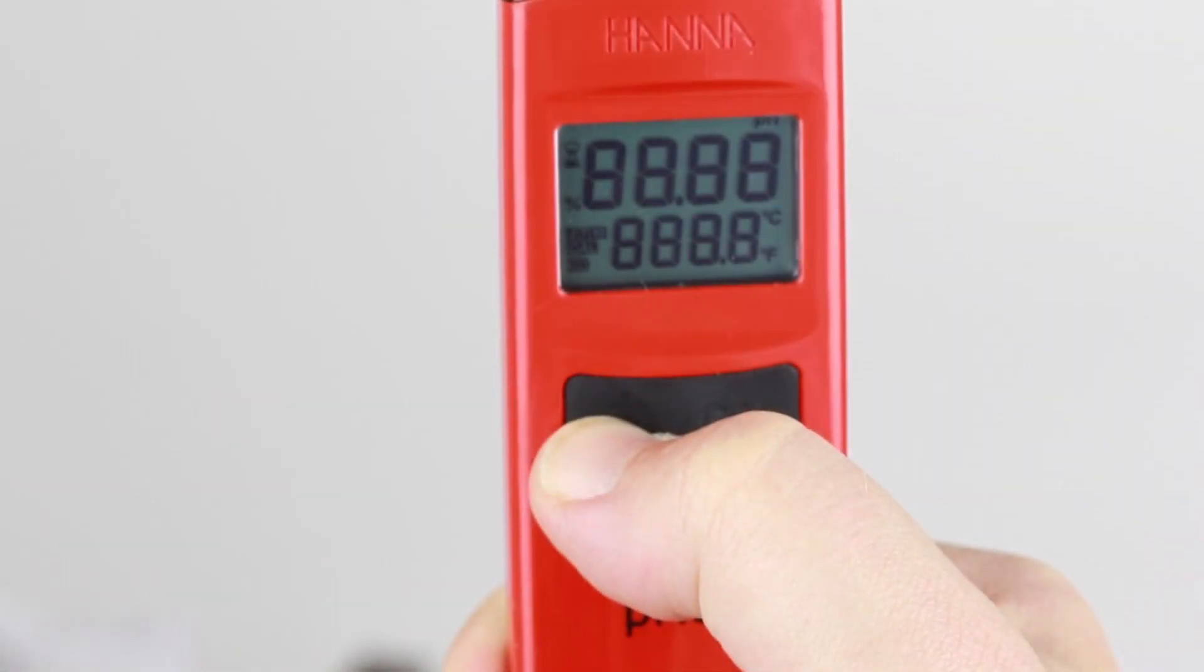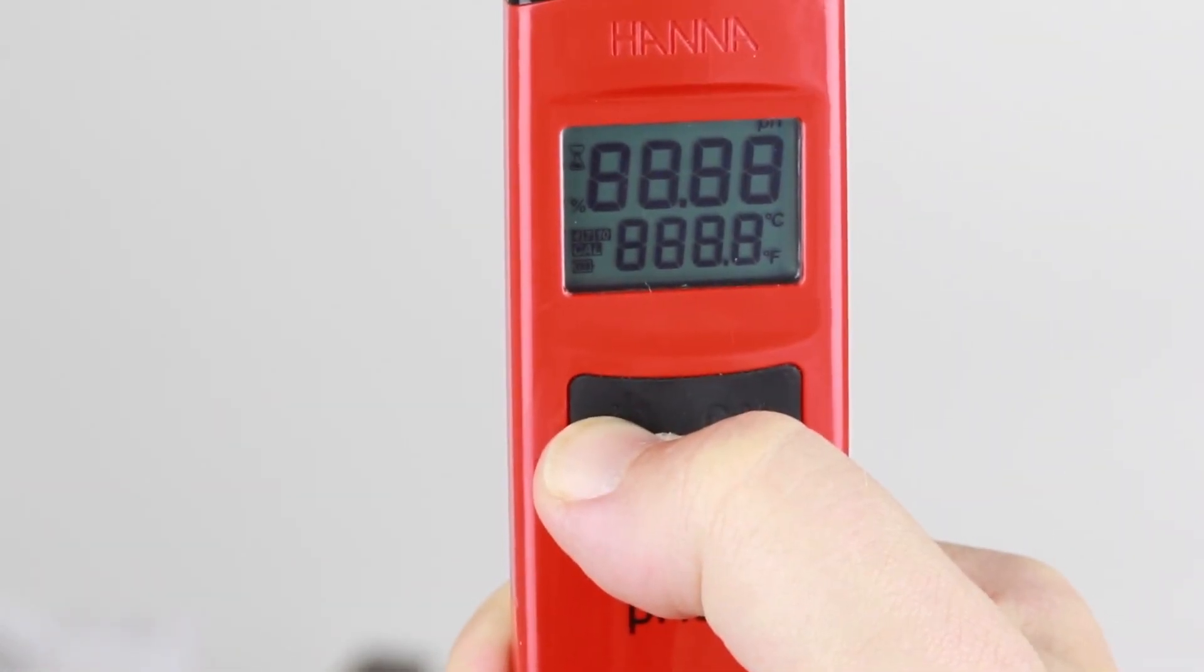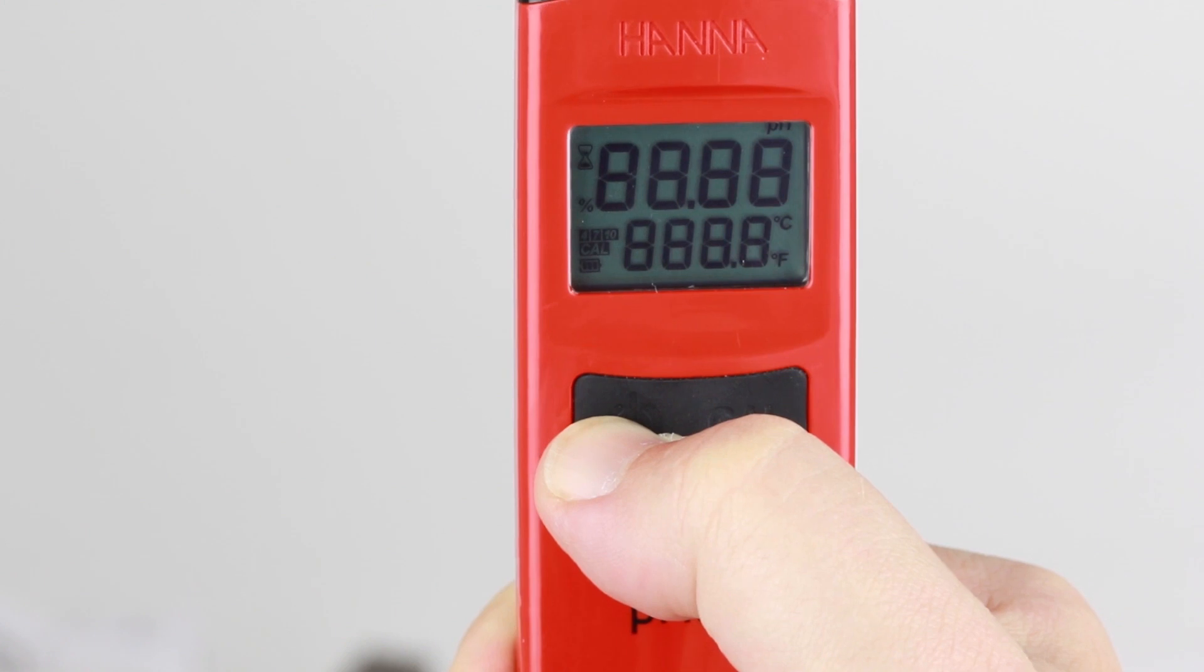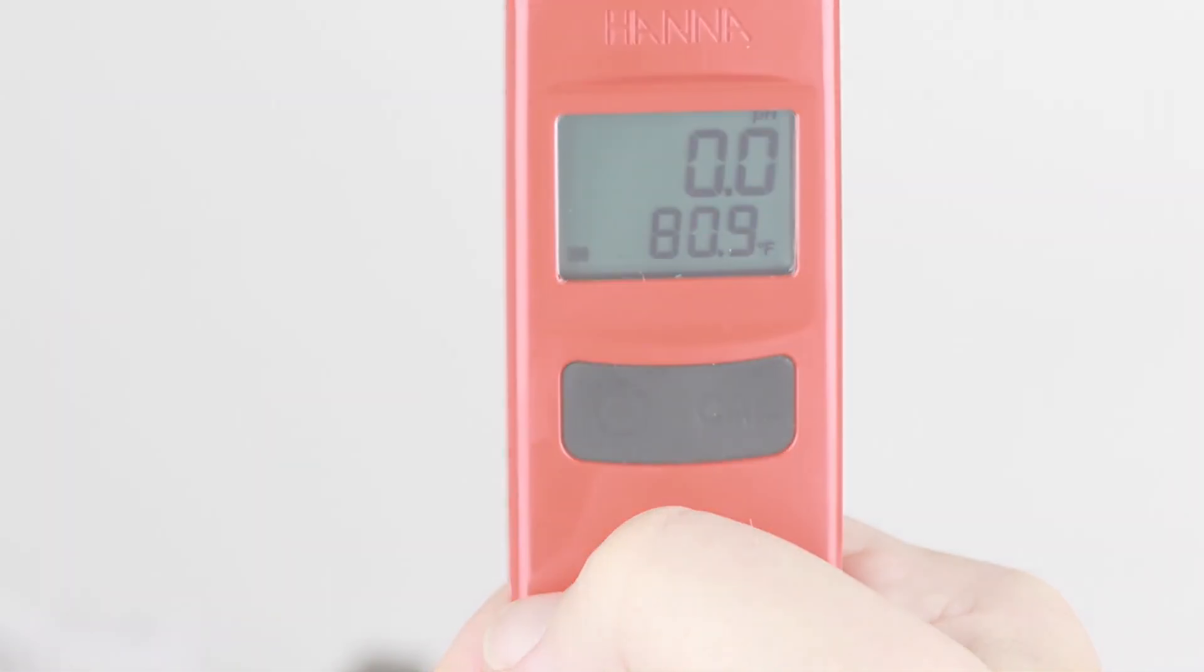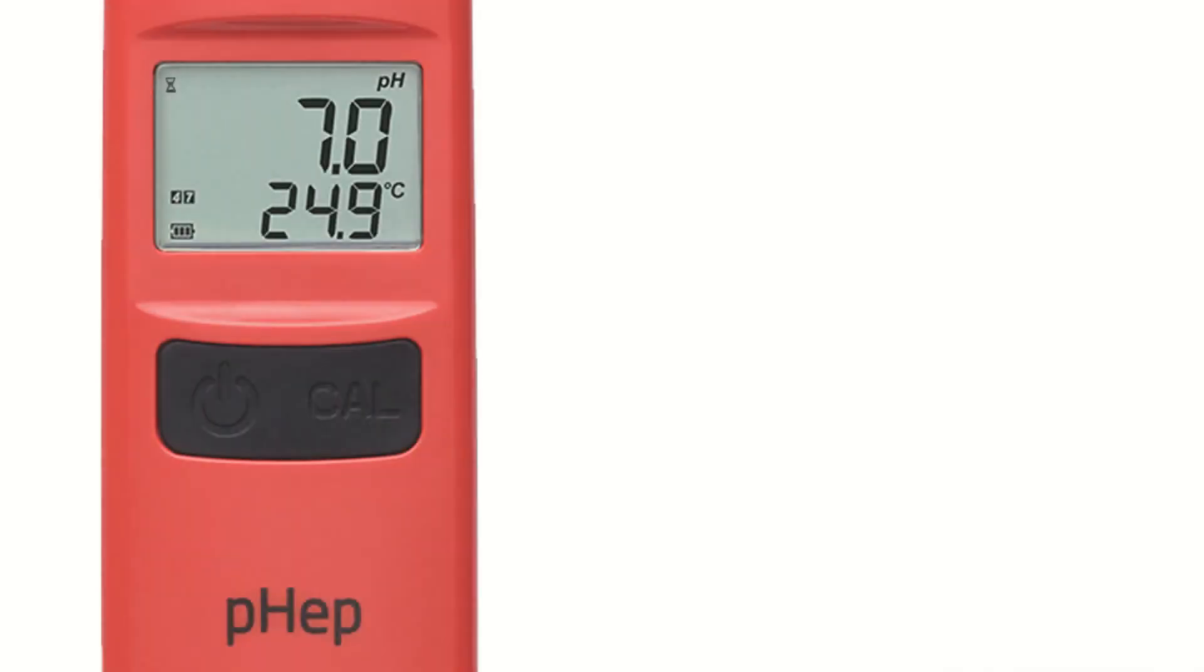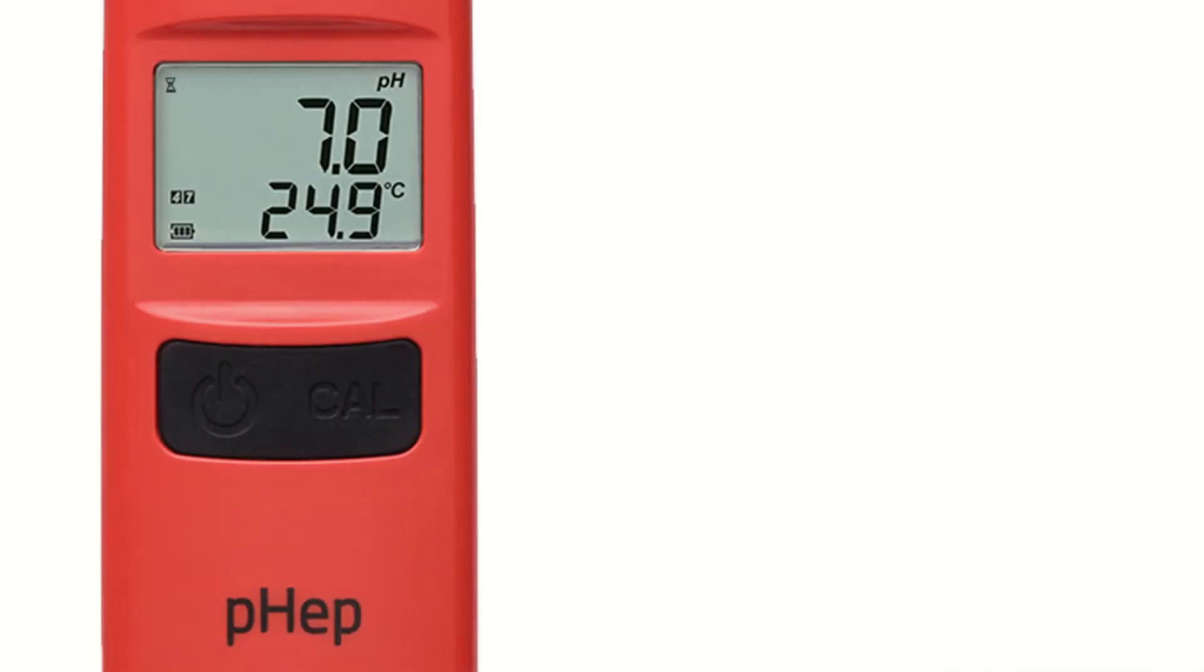To operate the meters, simply press the left on-off button to turn on. All the LCD segments are displayed, then the battery percent level, notifying the user of the remaining battery life. In operation mode, the following can be seen.